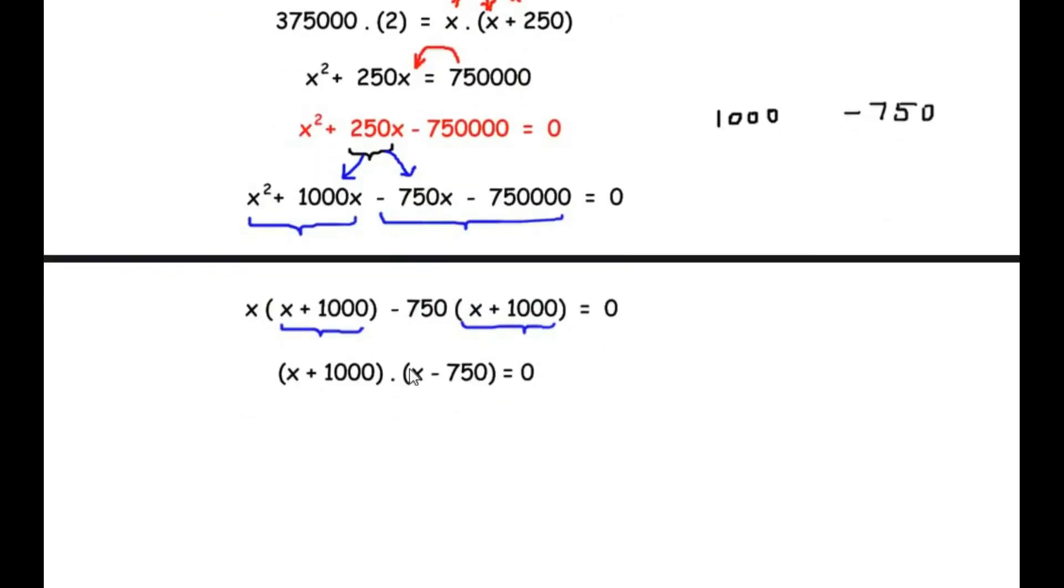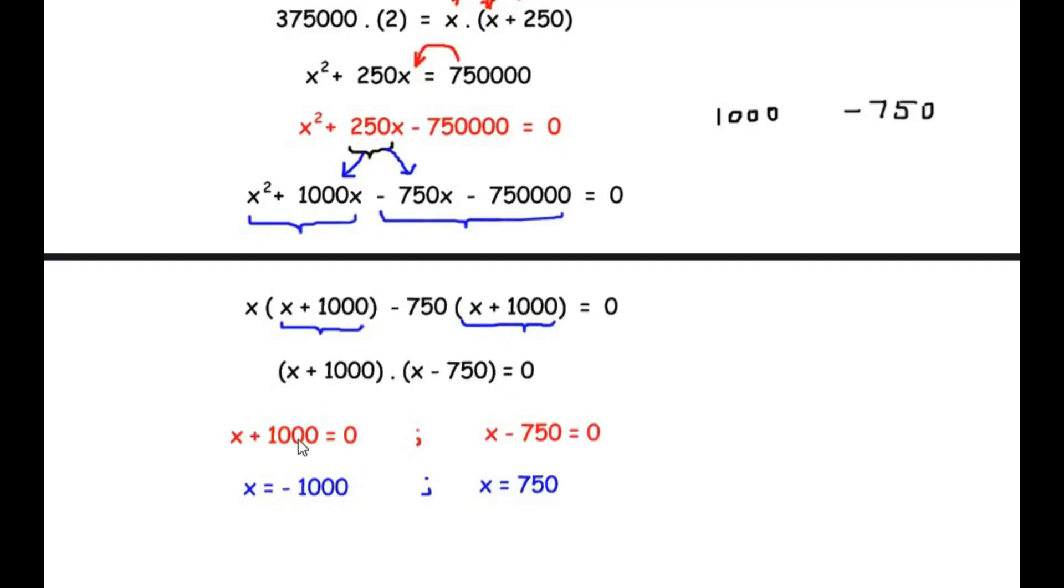Now let us independently equate both the factors to 0. So x plus 1000 is equal to 0 and x minus 750 is equal to 0. Now taking plus 1000 on the other side of the equal to sign, we get x equal to minus 1000 and taking minus 750 on the other side of equal to sign, we get x equal to 750. Now remember that x is the usual speed and speed cannot be considered as a negative number. So here the usual speed of the flight is going to be considered as 750 kilometers per hour. So this is the original speed of the flight.